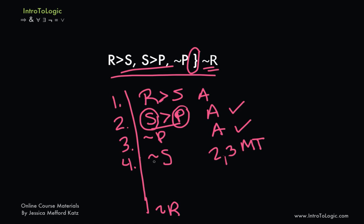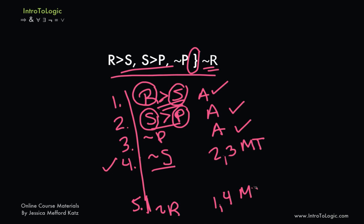Now we have 'not S'. We ask: is there an S anywhere else in our assumptions? Yes — on line 1 we have 'if R then S'. Modus tollens says that if you have a conditional and the negation of the consequent, you can derive the negation of the antecedent. We have the conditional and its negation of the consequent right here, so we use modus tollens to derive 'not R' — exactly the conclusion we're trying to derive. On line 5, we write lines 1, 4, modus tollens, and we've arrived at our conclusion.